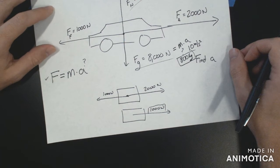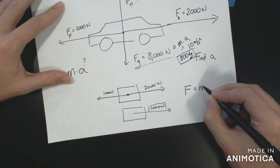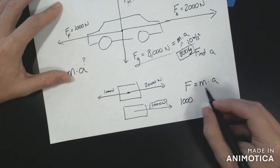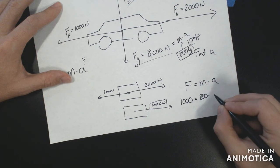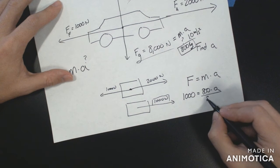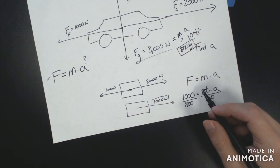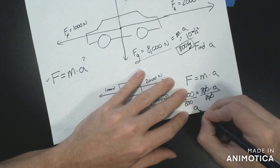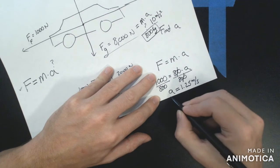Taking the 800 kilogram mass down to the final solution: force equals mass times acceleration, so 1,000 newtons equals 800 kilograms times A. Dividing both sides by 800, the acceleration of our car is 1.25 meters per second squared.